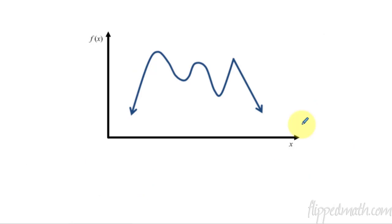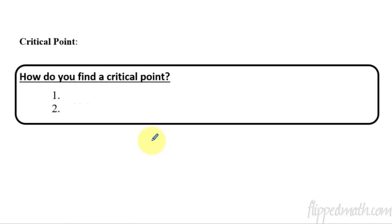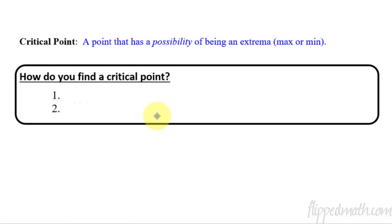Now put a dot on everywhere you see either a minimum or a maximum. We have these points here. After you've labeled it, we're going to define what a critical point is. A critical point is a point that has a possibility of being an extrema—in other words, a possibility of being a max or min. It might be a max or min; we don't know if it is. That's what a critical point is.